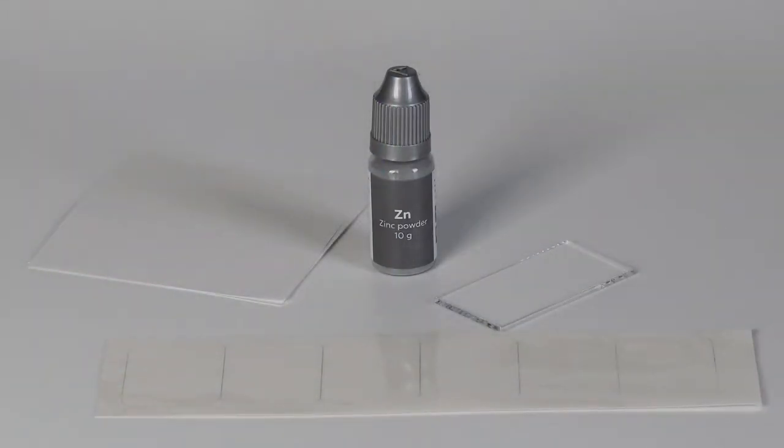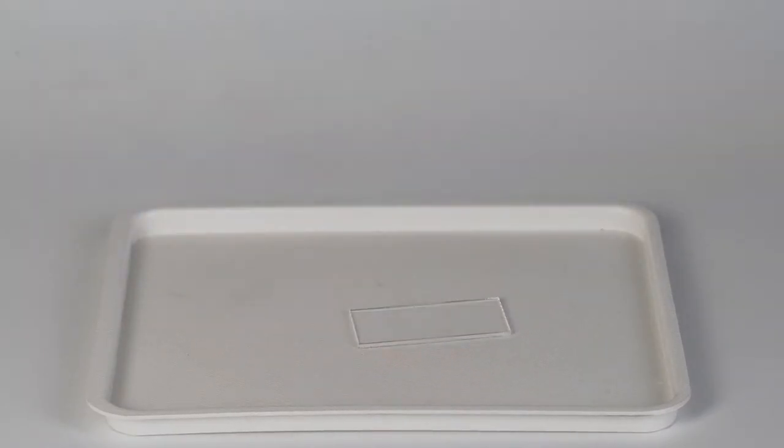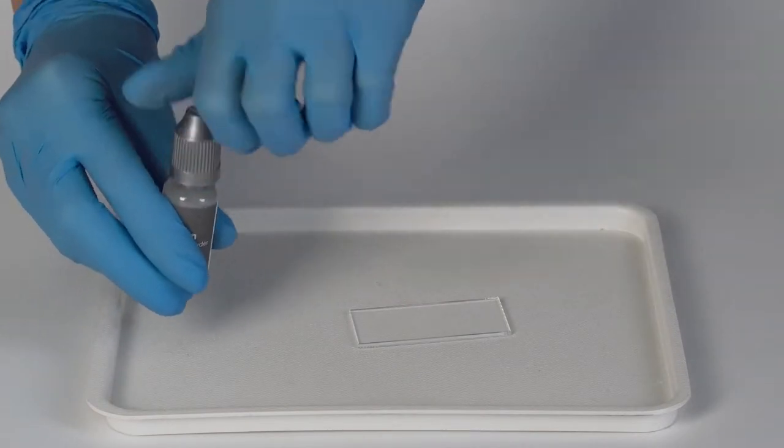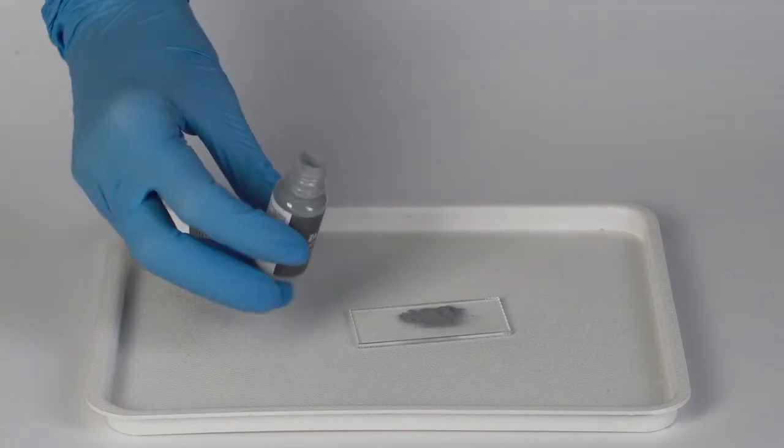Take the glass slide and make a fingerprint on it. Then put on the protective gloves. Carefully pour some of the zinc powder onto the spot where the fingerprint is.